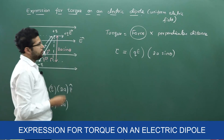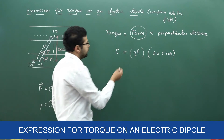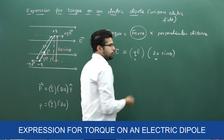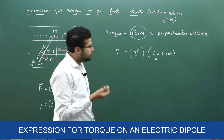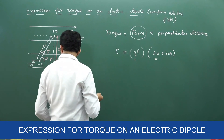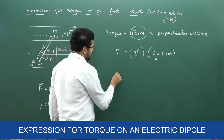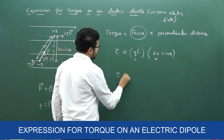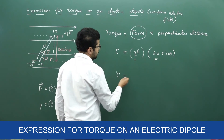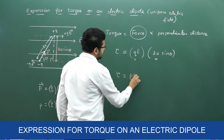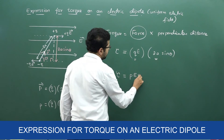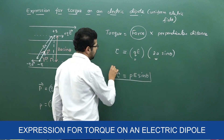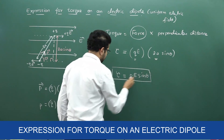Now I can group Q into 2A and replace it with P, the electric dipole moment. So tau equals P into E into sine theta. This is the equation for torque, or in vector form, tau equals P cross E.